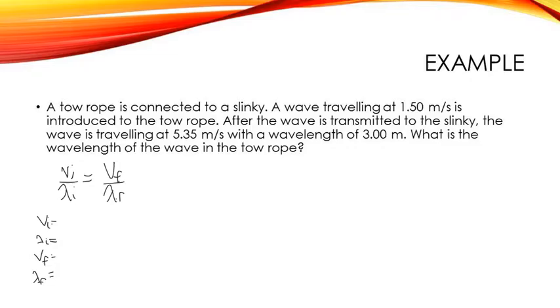So the velocity in the tow rope, the initial velocity is 1.5 meters per second. It's asking us to find the wavelength in the tow rope. The velocity in the slinky was 5.35 meters per second, and the wavelength was 3.0 meters.